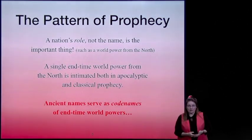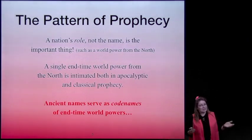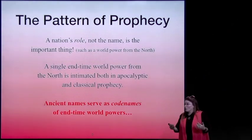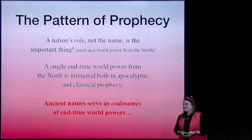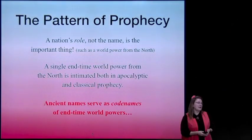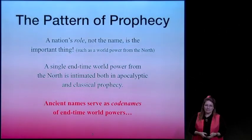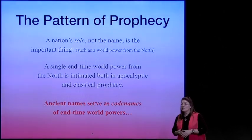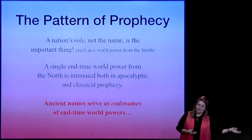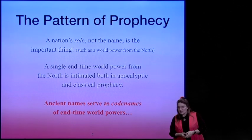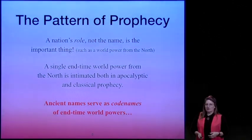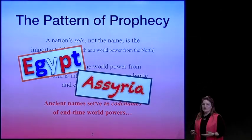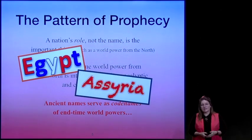Such as—and this is surprising—we talked about in the last lesson that a world power from the north is a big deal. That's a consistent symbol through the prophets. A single end-time world power from the north is intimated both in apocalyptic as well as the classical historical prophecies. Ancient names are code names of end-time world powers, and we're going to take a close look at that today so that you can see what Isaiah is doing.